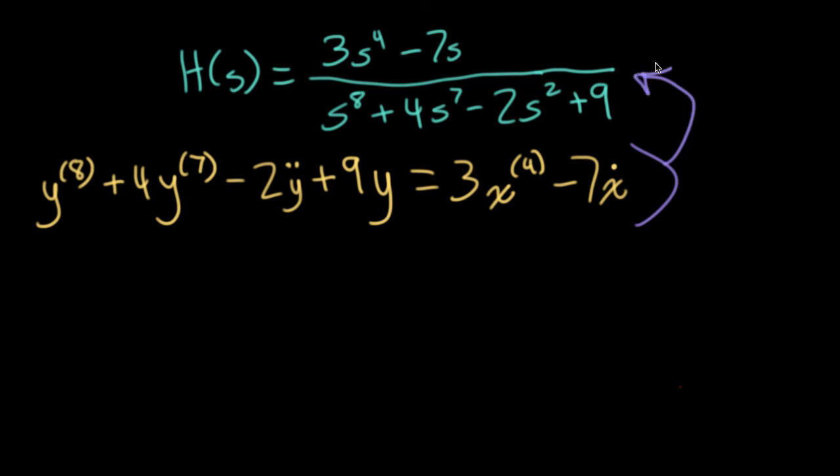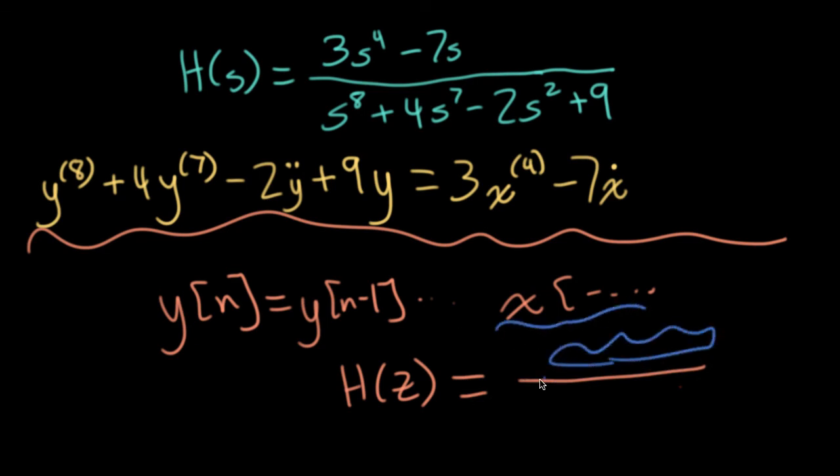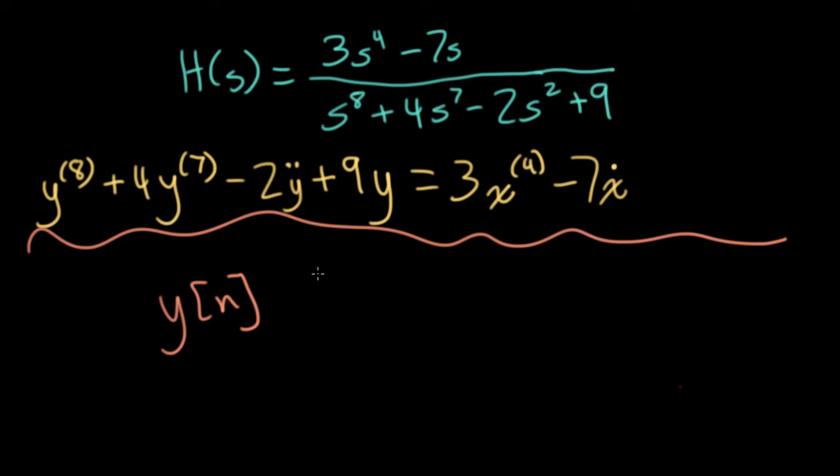One last thing I want to mention that will occasionally trip students up is the way we've been writing differential equations has a different style than the way we wrote difference equations in the discrete time context in EC 2026. There we usually had y of n on the left-hand side. And then all of your x stuff was on the right-hand side, along with all of your other y stuff. So in that context, when we're talking about z transforms, and we had things in the numerator having to do with x, and things in the denominator having to do with y, there was a sign flip that came from moving things from one side of the equation to the other. We don't have any of that stuff here. That's not something that we're needing here in the continuous time context.